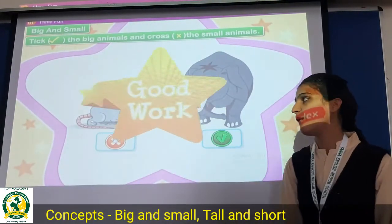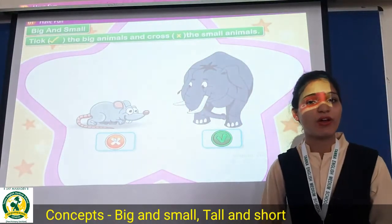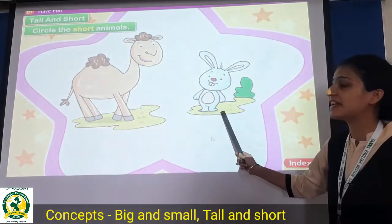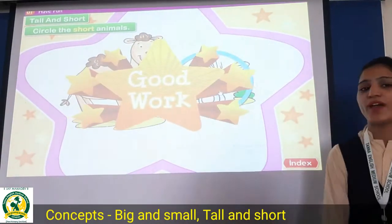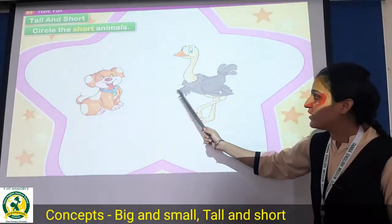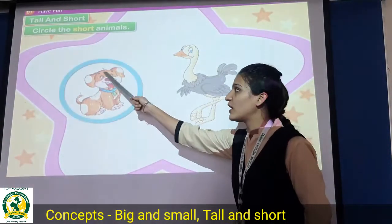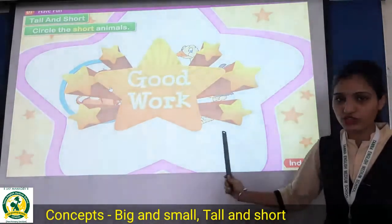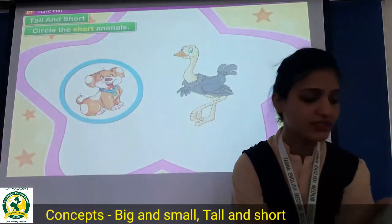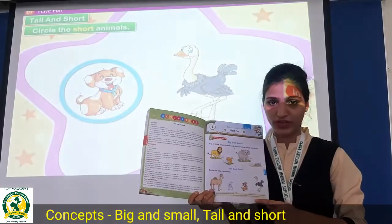Very good, well done students. Now the next concept is tall and short. Circle the short animal — the short animal is rabbit, so circle the rabbit. Well done. Now again, circle the short animal: dog is the short animal, so circle the dog. Don't circle the ostrich — it is tall. So students, complete page number 107 in math. Thank you, see you.